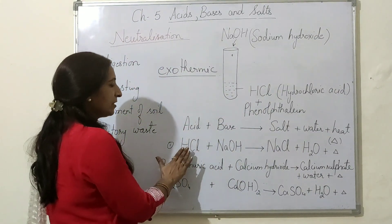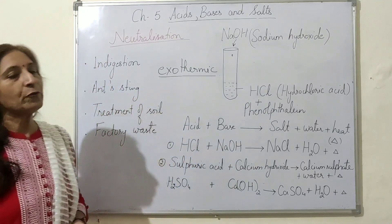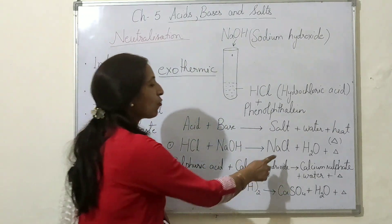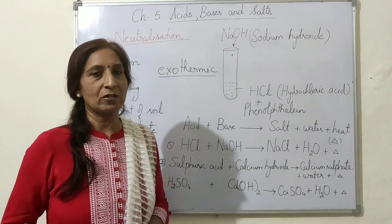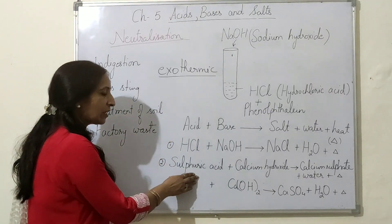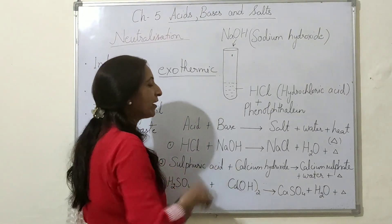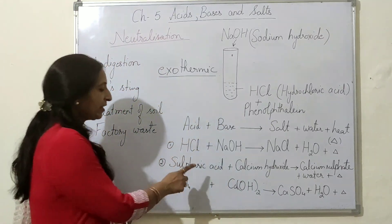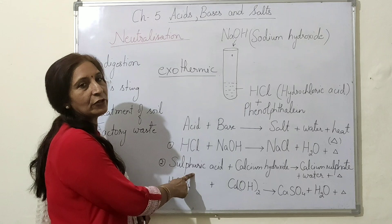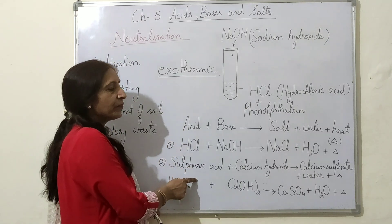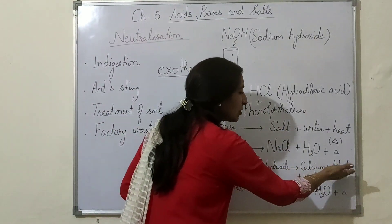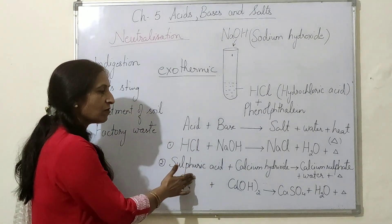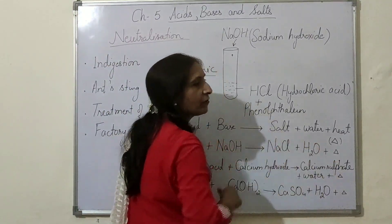Here HCl is a strong acid and NaOH is a strong base, so when neutralization occurs they completely neutralize each other and the salt formed — sodium chloride — is a neutral salt. In the second case, sulfuric acid is a strong acid but calcium hydroxide is a weak base. The acidity of sulfuric acid is not completely neutralized, so its acidic nature is retained by the salt, and the salt formed is an acidic salt. So when the acid is strong and the base is weak, the salt will be acidic.